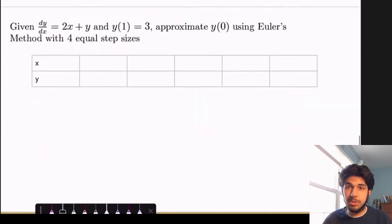So let's do our own trial here. So we're given dy dx equals 2x plus y, with y of 1 equals 3. And we want to approximate y of 0 using Euler's method with four equal step sizes.